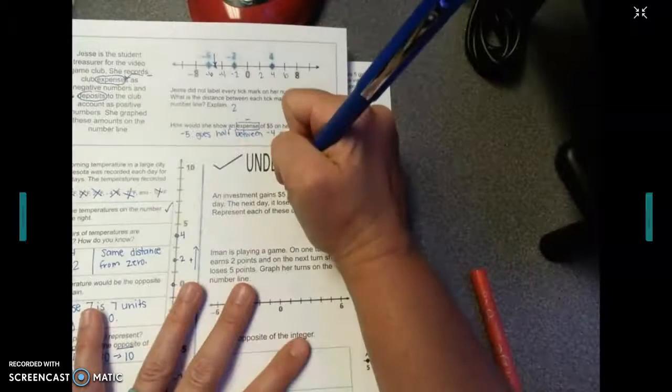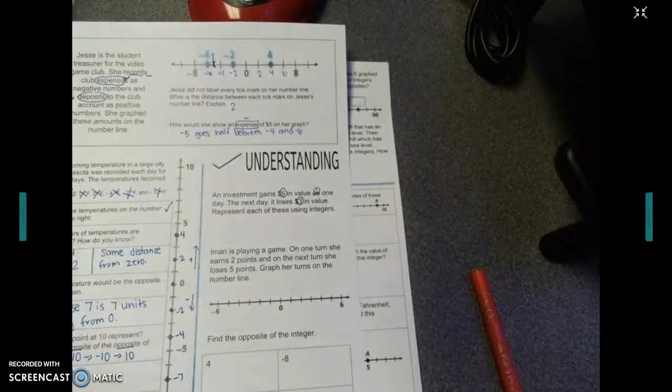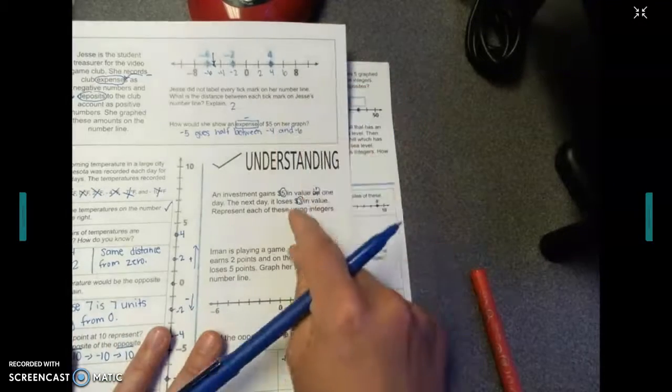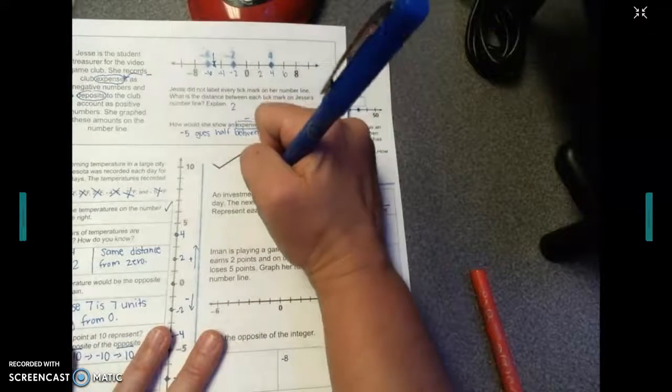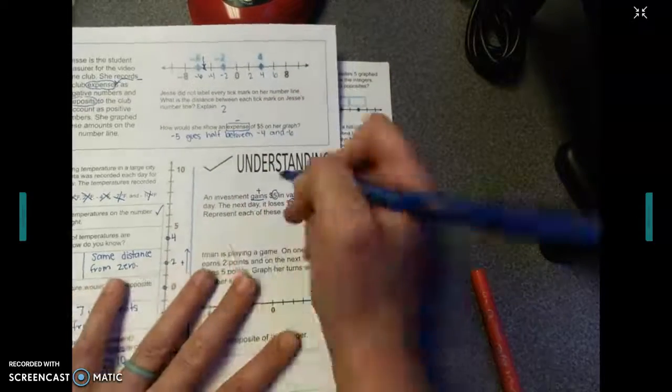So let's first look for our important information. Let's find our numbers. So we have 5 and we have 3. Those are integers. Now we need to see if they're positive or negative. If we look at the word in front of $5, it says gains. If I gain something, that's a positive thing. So this integer would just be 5.